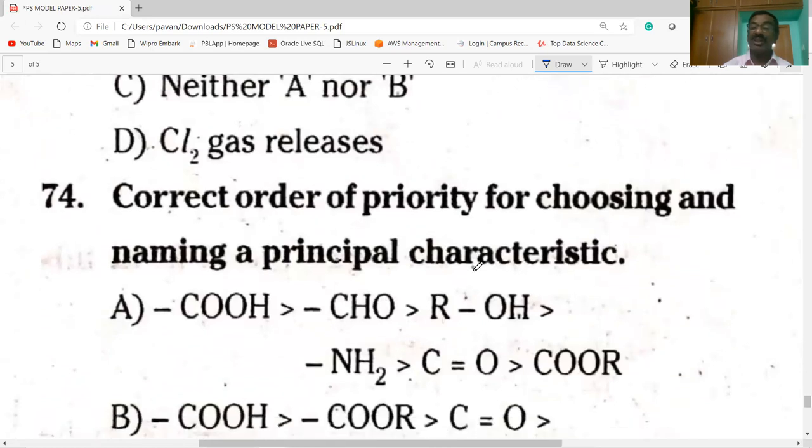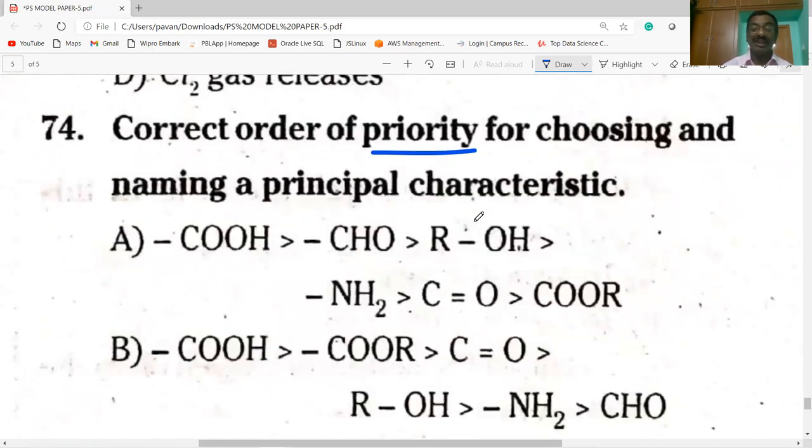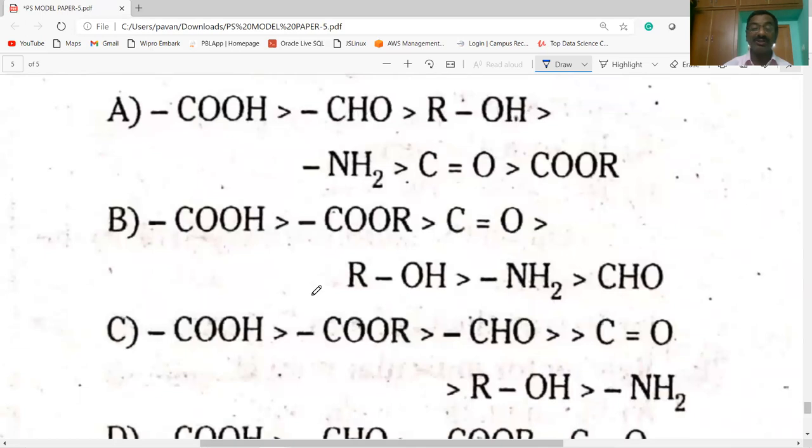Next, correct order of priority of choosing the naming of principal characteristic in IUPAC nomenclature. Priority order: first acid group, then ester group, then aldehyde group. So option C is correct. It is acid group carboxylic acid, then aldehyde, then ketone, then alcohol, then amines is the correct order.